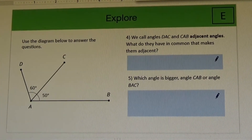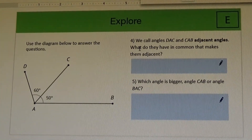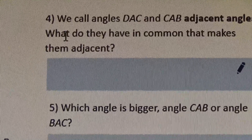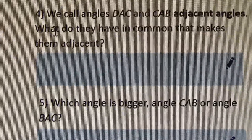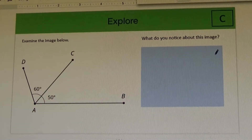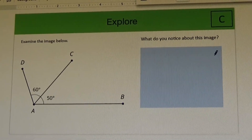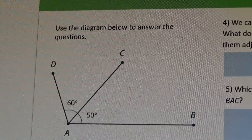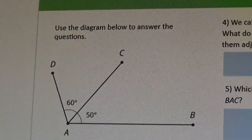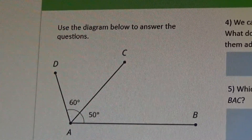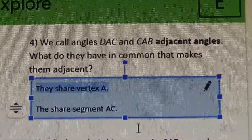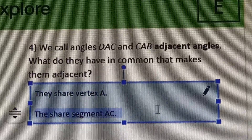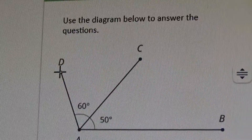Slide E. Use the diagram below to answer the questions. We call angles DAC and CAB adjacent angles. What do they have in common that makes them adjacent? Hint: look back at all the wonderful answers you put for slide C to help you out. Let's pause here to reflect and write your answer to the question, then press play to continue. That's right.